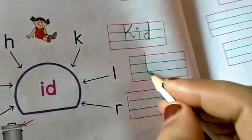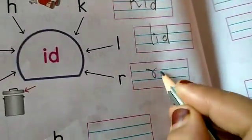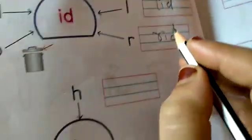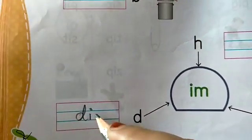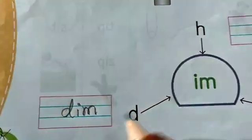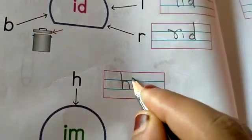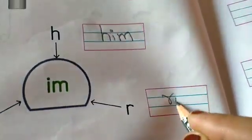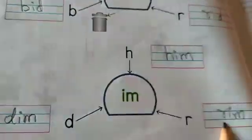Next is, L I d, lid. Next, R I d, rid. Using I m. D I m, dim. H I m, him. R I m, rim. Dim, him, rim.